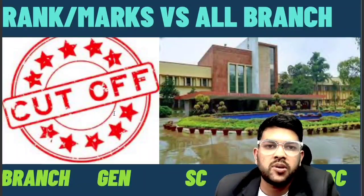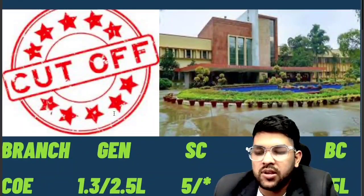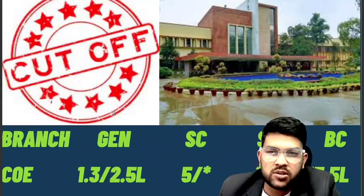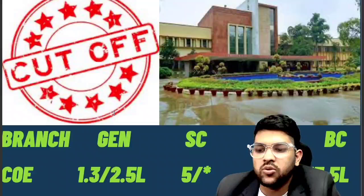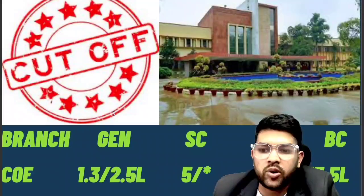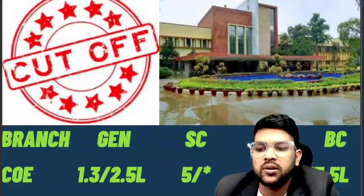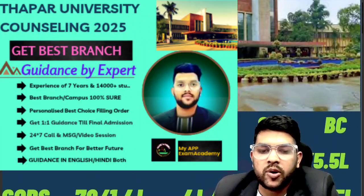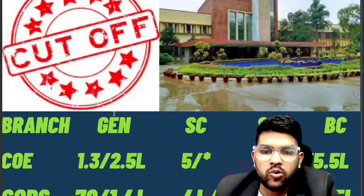For COE branch — full forms are shown on screen — the rank cutoff is 1.3 lakh for other state and 2.5 lakh for home state (Punjab students). Do careful counseling up to the last round to get the best out of your rank. For SC category, cutoff goes up to 5 lakh; for BC (home state only), 5.5 lakh. Other state OBC students do not get reservation benefit.